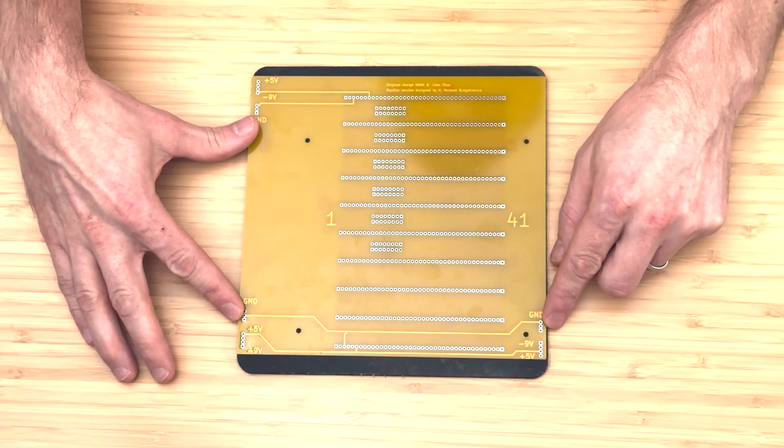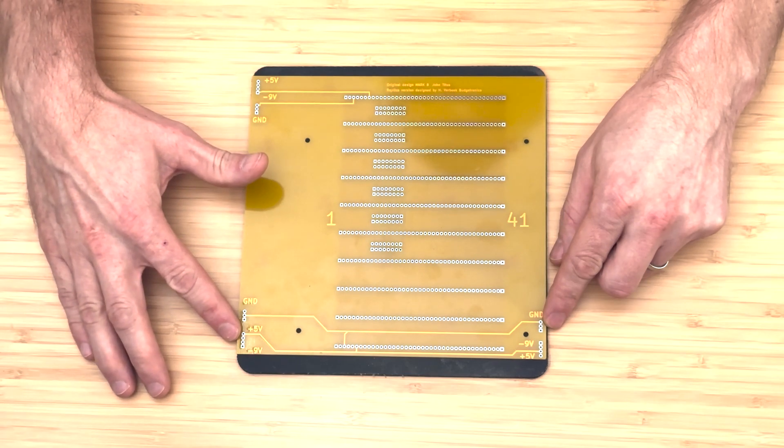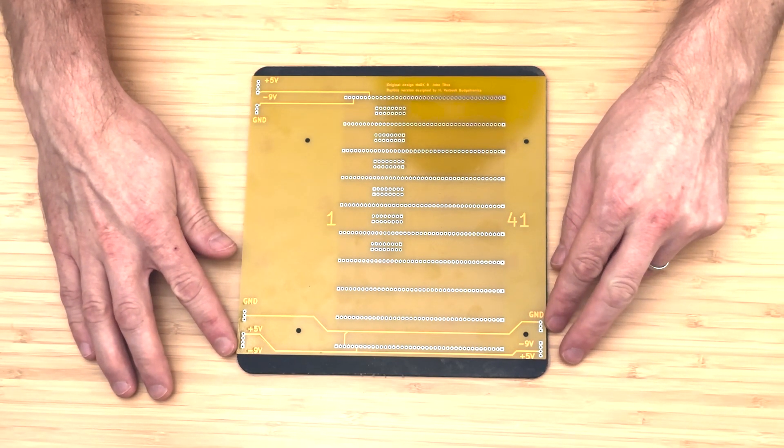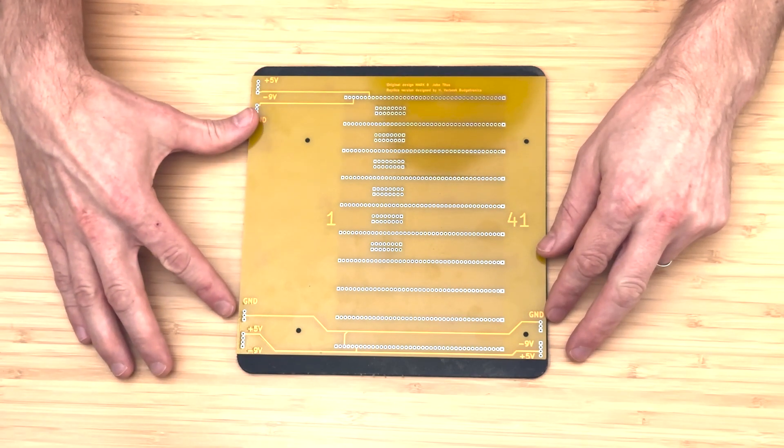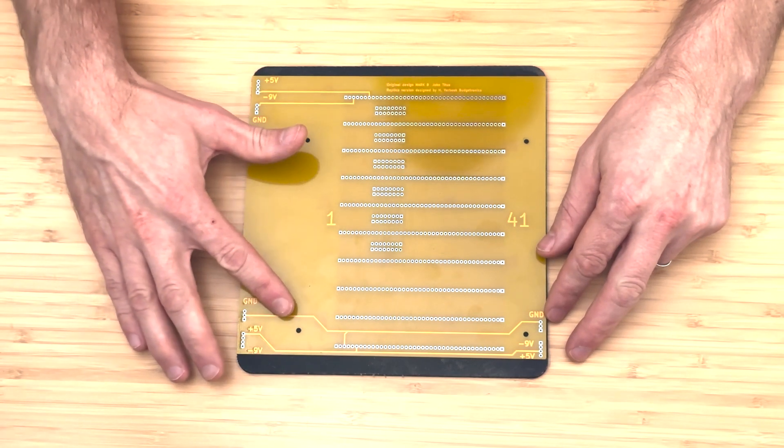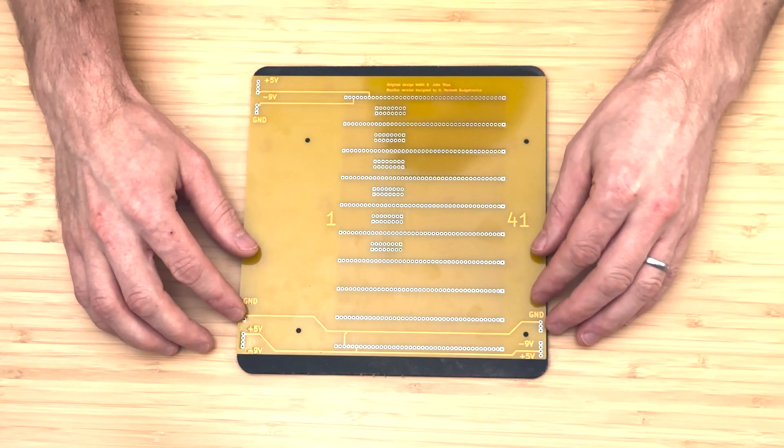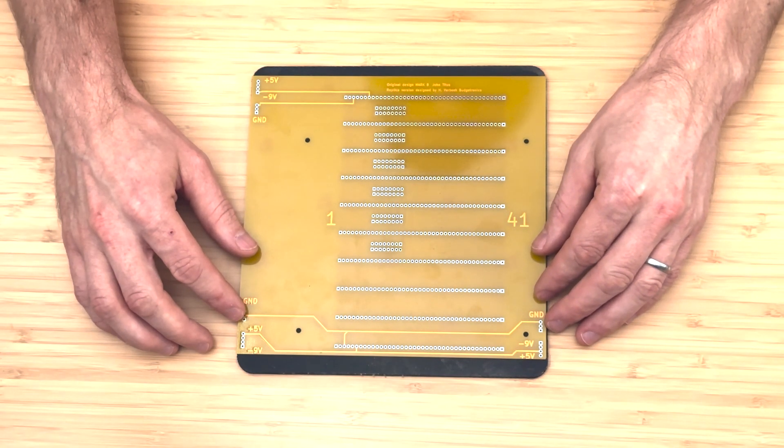The design of this backplane is quite straightforward. On each side, you'll find the power connectors for both positive 5 volts and negative 9 volts, and also connectors for the ground. Although we'll only be using one set of these connectors in our build, we'll go ahead and install all of them for completeness.